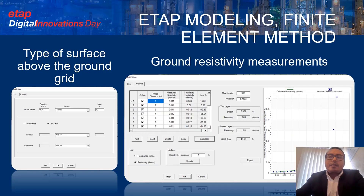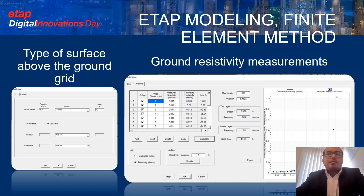The modeling using the finite element method: after collecting all the previous data, we needed to simulate the system in the software. We created a new project and started adjusting the parameters in the soil editor. In this window, we entered the values obtained from the ground resistivity measurements, which gave us the general resistivity of the top and lower ground layers. These values are important because they are directly involved in the results of the study.